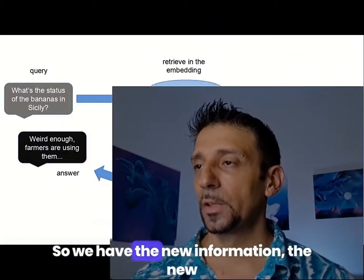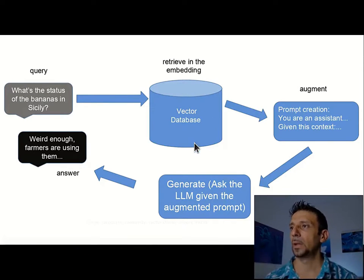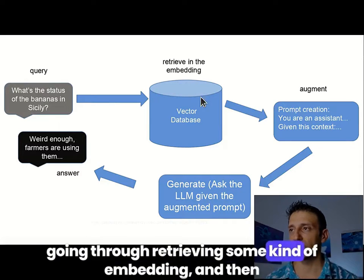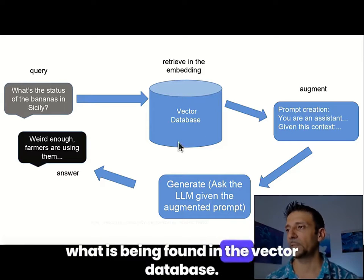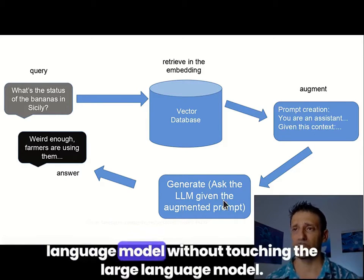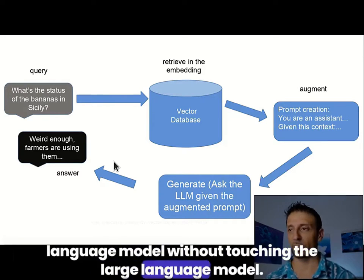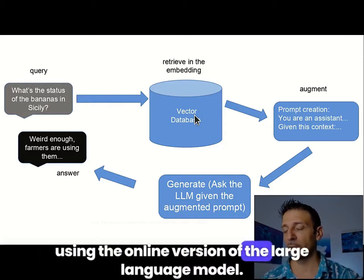So we have the new information, the new dataset that has been encoded and embedded in a vector database. When we are processing a query, first the query goes through retrieving some kind of embedding, and then it creates a better, augmented prompt with what is found in the vector database. At that point we query a large language model without touching it, so we can still use the online version.